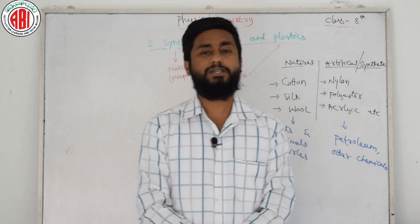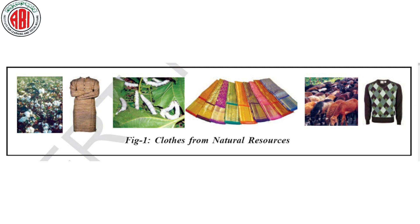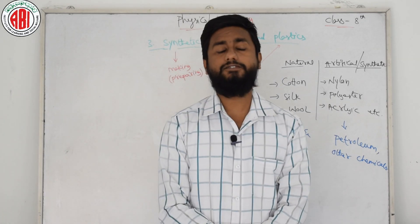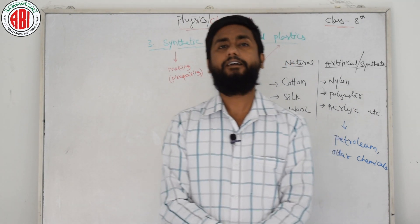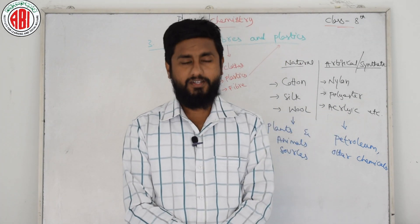I am placing one image on your screen. Look at the image — you will find a wide range of clothes. Starting with a cotton agriculture field, and beside it a kurta-type cloth made of cotton. Then you see green leaves with white silkworms, and beside the silkworms you can see silk sarees made from silk. After that you see an image of sheep, and beside it a sweater made from sheep's wool.